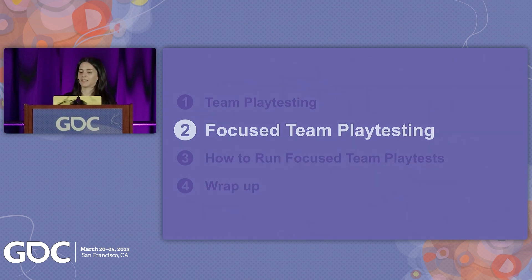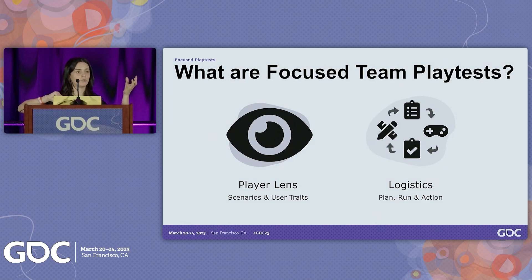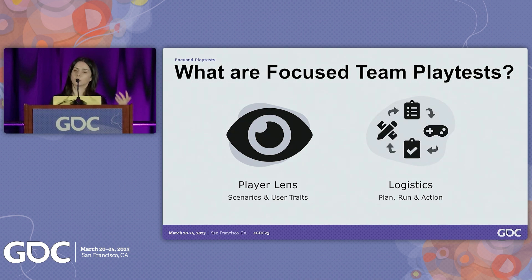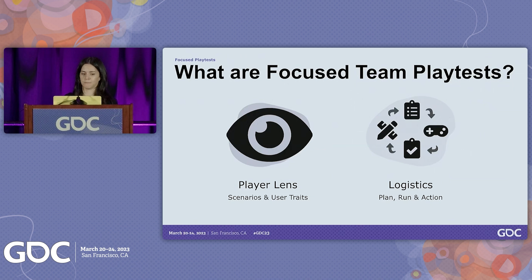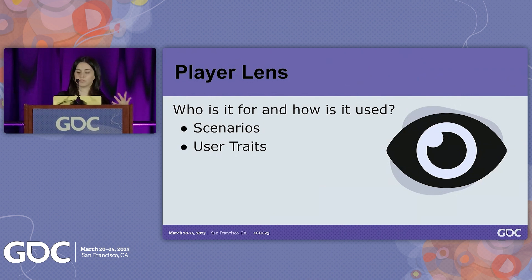Focused team playtesting has two key pieces. One is a player lens that you use to assess the game from your player's perspective — this includes scenarios that the team will try and the user traits you want to use to collect and weight feedback differently. The other piece is the logistics around planning and running this playtest most effectively to get relevant feedback. The player lens captures who a feature or game is for and how it's going to be used, and it's composed of scenarios and user traits.